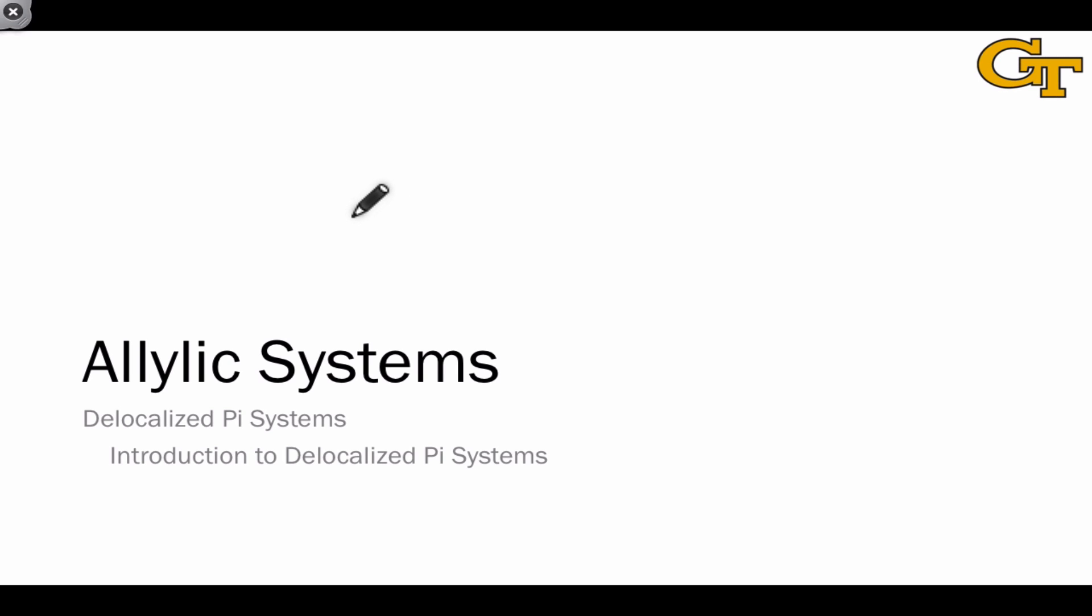So far we've focused on pi systems containing an even number of carbon atoms, but we've seen examples of pi systems containing an odd number of carbon atoms already, most notably allylic systems containing three carbons.